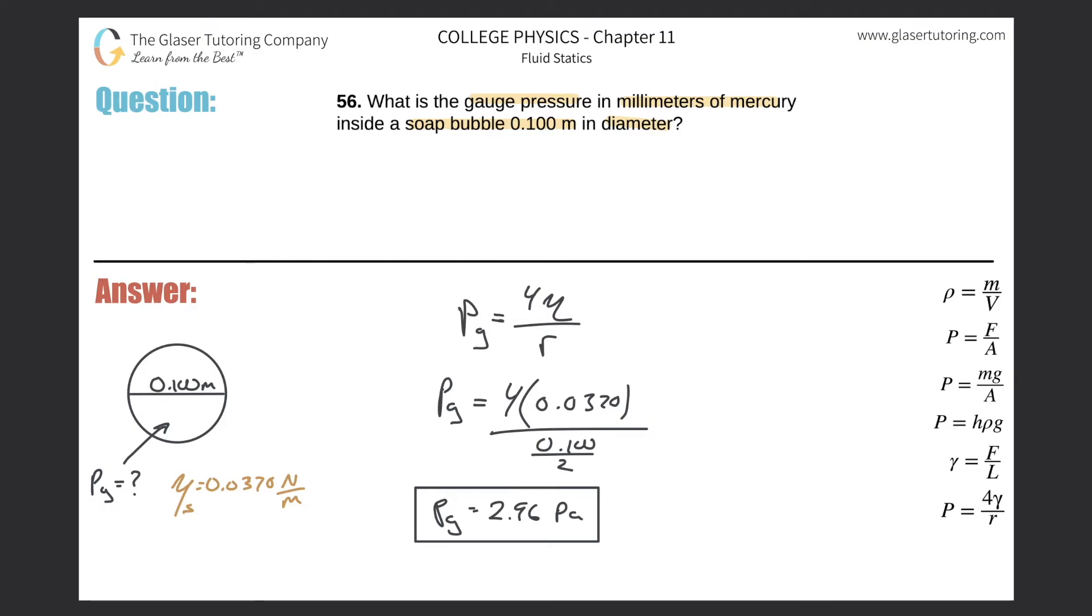Now, all we need to do is convert this into millimeters of Mercury. We've done conversion like this in the past. So we can take the 2.96 value, and this is in Pascal, and realize that in terms of relating it to atmospheres, the relationship between Pascal and millimeters of Mercury will be 1.01. You can go out to three, I just use 1.01 times 10 to the fifth of Pascal for every 760 millimeters of Mercury. Pascals cancel, and now here you go.